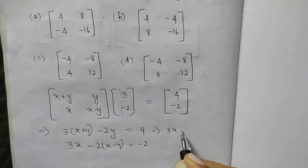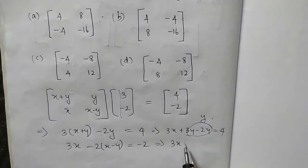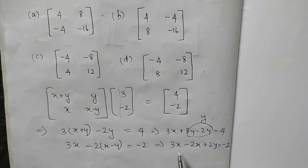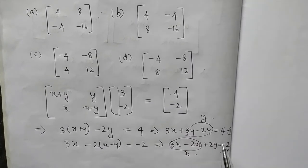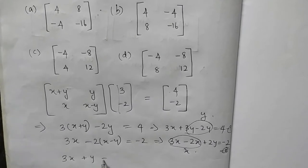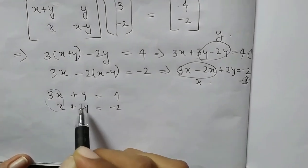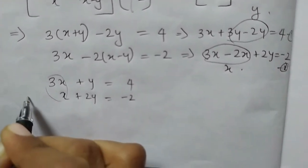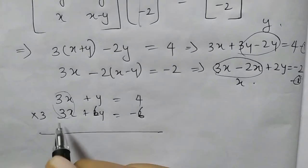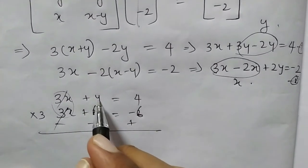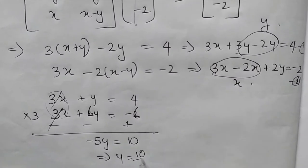Rearranging: 3x plus 3y minus 2y equals 4, so 3x plus y equals 4. And we get x plus 2y equals minus 2. We subtract these two equations. Multiplying the second equation by 3: 3x plus 6y equals minus 6. Then minus 5y equals 10, so y equals minus 2.